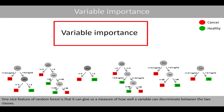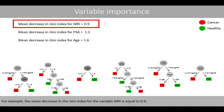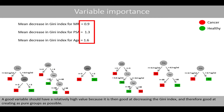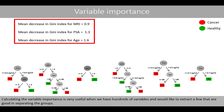One nice feature of a random forest is that it provides a measure of how well a variable can discriminate between the two classes. One such measure is the mean decrease in the Gini index. For example, the mean decrease in the Gini index for the variable MRI is equal to 0.9, based on the Gini index of 4 splits across our 6 trees. A good variable should have a relatively high value, as it is then good at decreasing the Gini index and creating pure groups. In this case, age is the best variable to discriminate cancer cases from healthy controls. Calculating variable importance is very useful when we have hundreds of variables and would like to extract a few that are good at separating the groups.